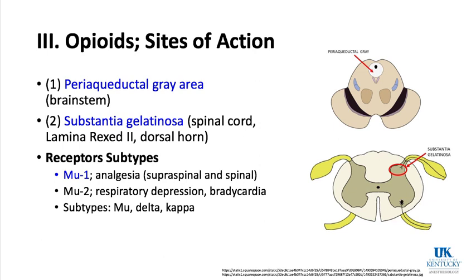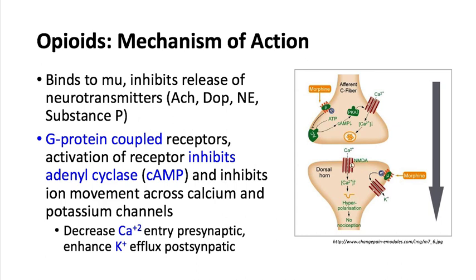Opioids' mechanism of action: they bind to the mu receptor and inhibit release of neurotransmitters including acetylcholine, dopamine, norepinephrine, and substance P. Morphine binding to a mu receptor is shown. G-protein coupled activation inhibits cyclic AMP, then inhibits ion movement across calcium and potassium channels. Presynaptic calcium doesn't come in as much, so there's less release of neurotransmitters like substance P, which is associated with pain transmission in afferent C-fibers.